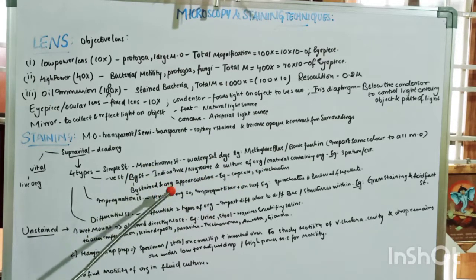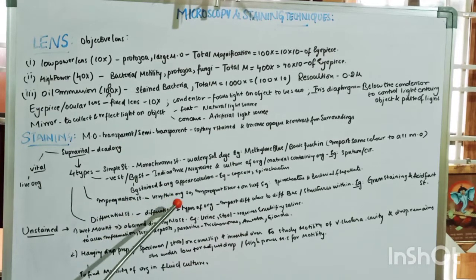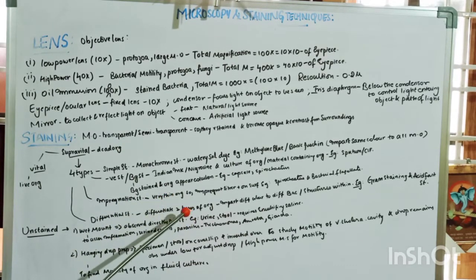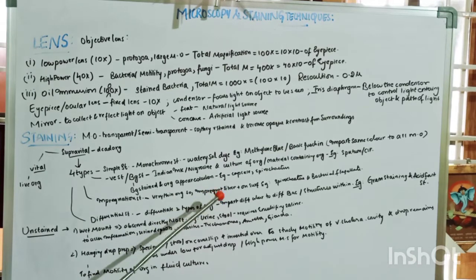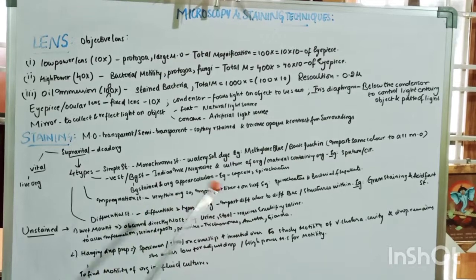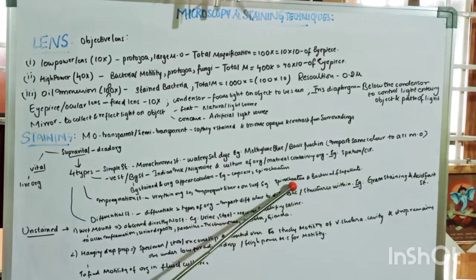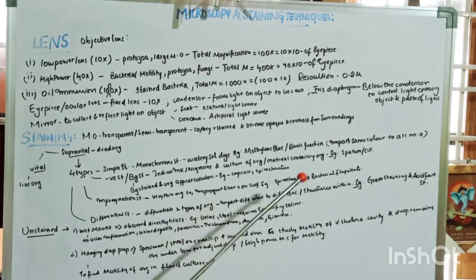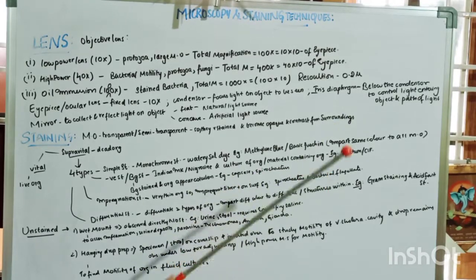In impregnation staining, the organisms are very thin, so impregnation with silver is added to their surface to give them some mass so we can see them. Examples include spirochetes and bacterial flagella.